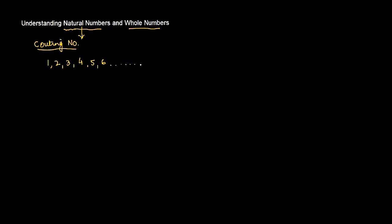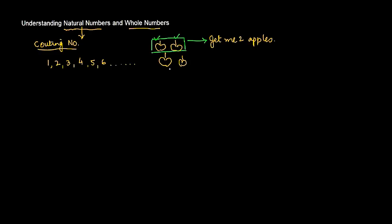These counting numbers are useful because they are used to count various things in our daily lives. Let's say there are certain apples lying on the table and your mother says, can you get me two apples? So what do you do? You start counting the apples — one, two — and you pick them up and take them to your mom. The counting numbers or natural numbers are used to count various things in our day-to-day lives. We are all fond of cricket, so in cricket you count how many runs a particular batsman or a team has scored — one, two, three, four — and you keep counting until you reach the total.